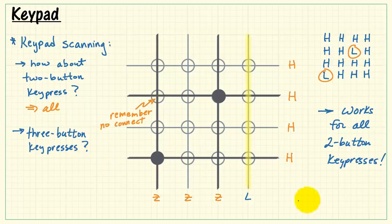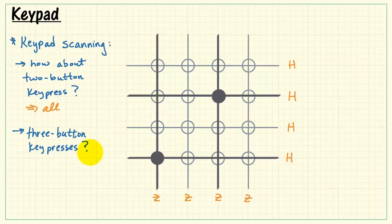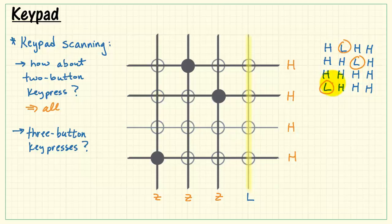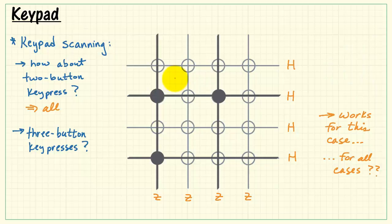Now, let's give this a try for three button key presses. Let me begin by closing this switch right here. We'll see if this works. Now, I'm going to do the scan process fairly quickly here. You might want to pause and replay, if needed, to better study what's happening here. As we look at the results of the scan, we see these three detections, and that, of course, corresponds to these three buttons right here. Looks like it worked just fine for this case. The question is, does it work for all cases?